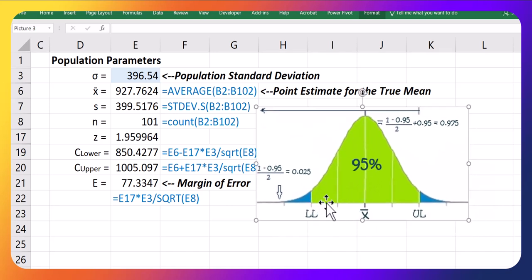It's 77.33 to either side of our sample mean, which was the 927.76. So you could also build up your interval by taking that 927, subtracting 77 to get to the lower limit, and take that 927 and add 77 to get to the upper limit.